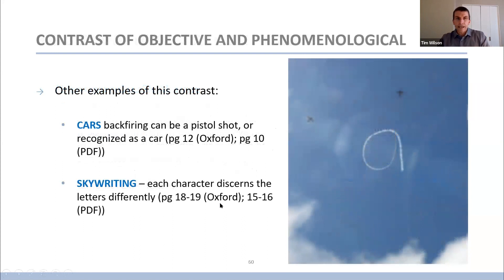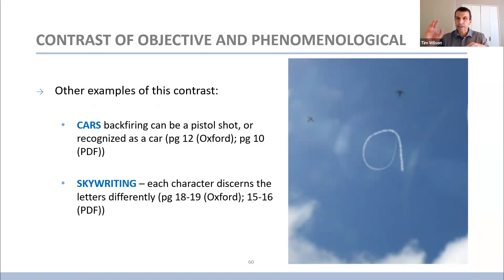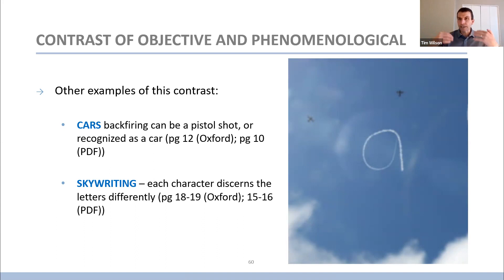Another example of how this occurs: cars backfiring early in the novel — around page 10 in the PDF — where some characters ask 'Is that a gunshot?' and another says 'Oh, those cars.' Different people experience that common object differently. Similarly, there's a skywriting example where each character discerns different letters across two pages of description. Very similar to what happens when Big Ben rings throughout the novel: different characters take it differently based on their experience of the temporal flow of the day.